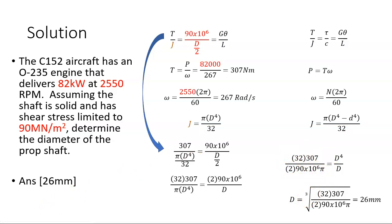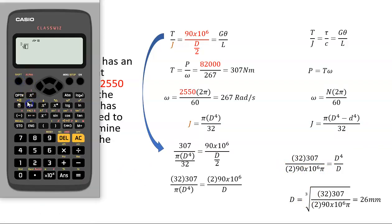We're going to get the cubed root of 32 multiplied by 307. I don't know if you can hear the rain coming through there in the background. That's absolutely bucketing down now. 2 by 90, 10 to the power of 6. And we're going to multiply that then by pi.